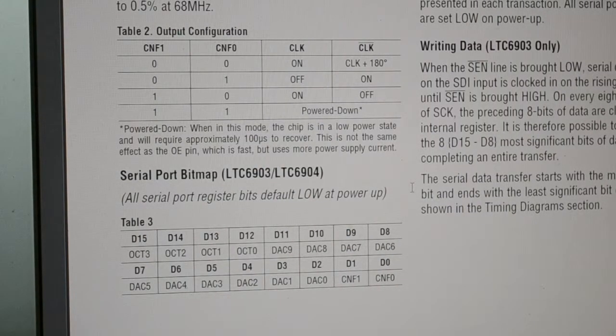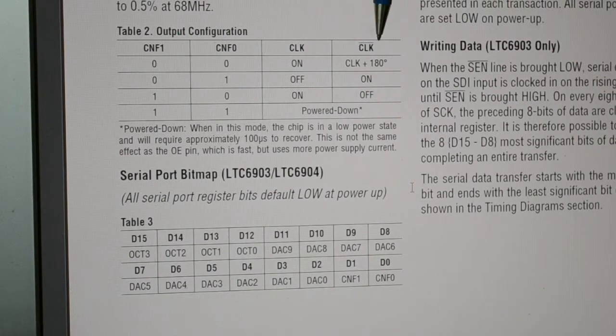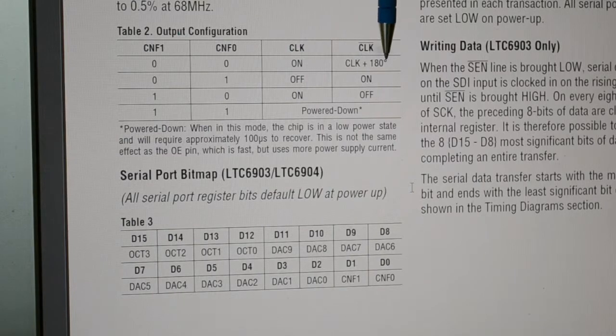Finally, while I'm on the datasheet, these are the last 2 bits of the 16-bit SPI. So these are the functions for the output, the clock output. And you can see if 0, 0, they're both on, that's the initial clock, and then the second clock is 180 degrees out of phase.